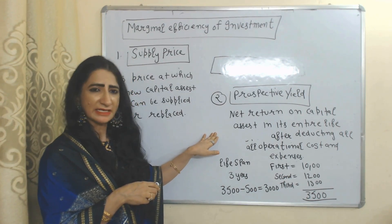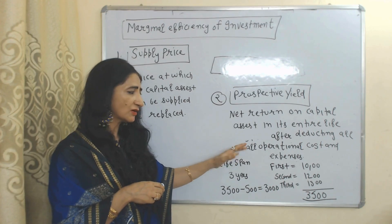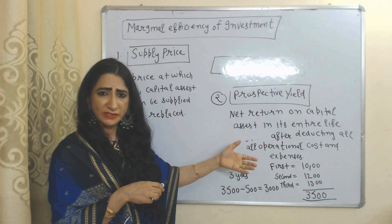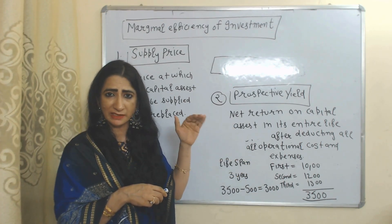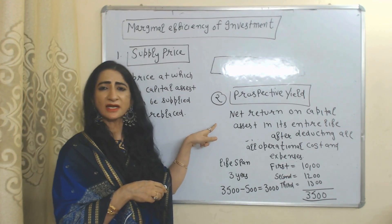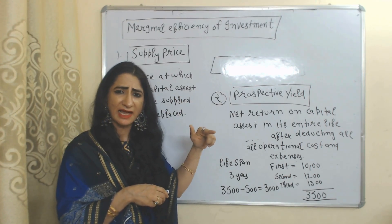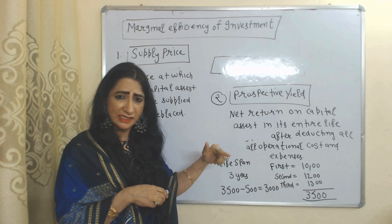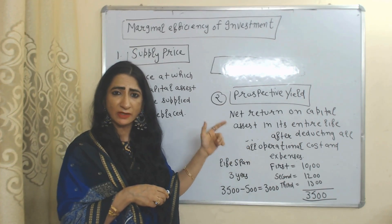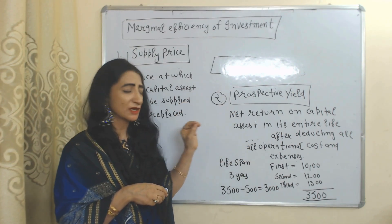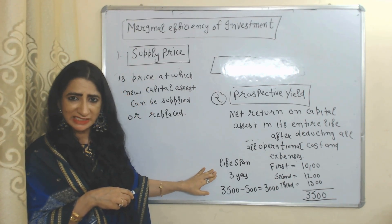Prospective yield is the net return on a capital asset over its entire lifespan after deducting all operational costs and expenses. For example, the lifespan of a machine is 3 years.